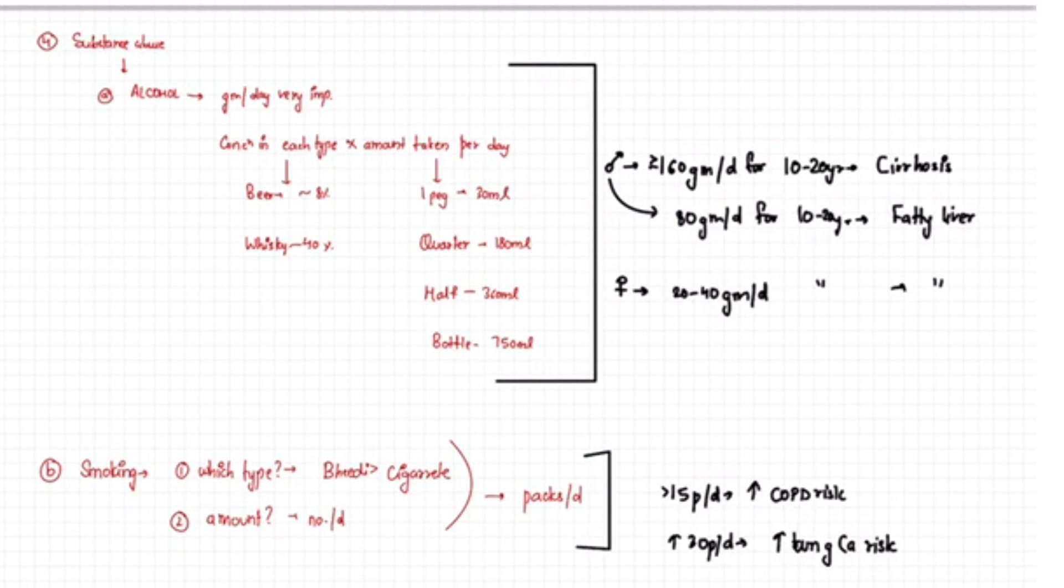Whereas if the patient takes more than 160 gram per day for 10 to 20 years, the patient has a high risk of cirrhosis. This I am talking about the male. So you should know about the exact amount of alcohol the patient is taking per day.